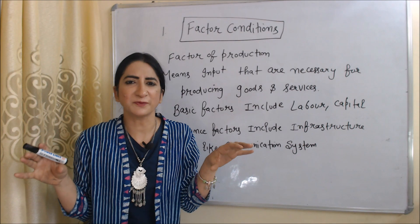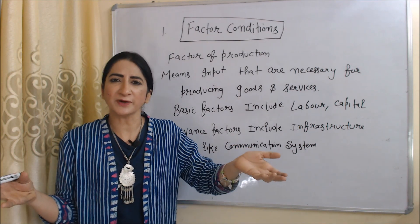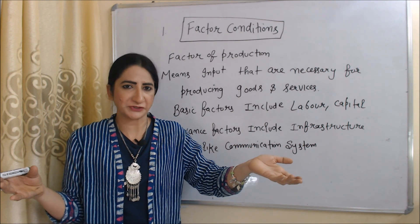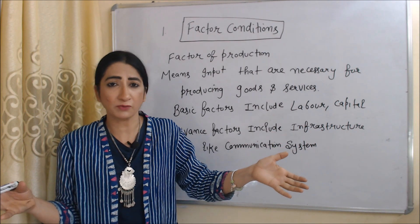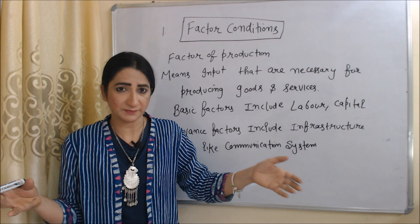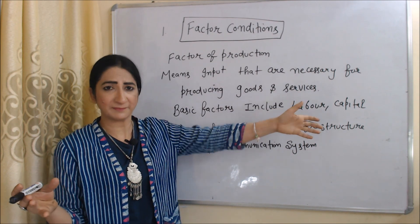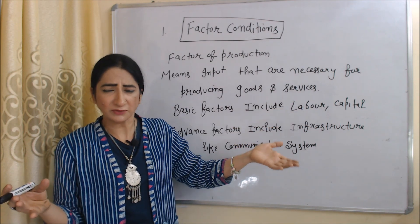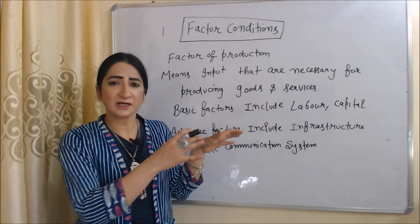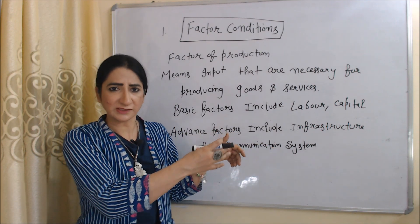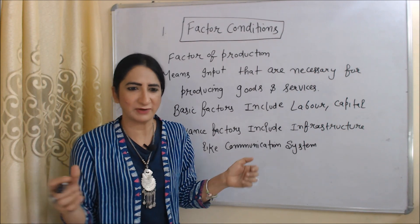The first diamond is factor conditions. Factor conditions means factors of production — inputs that are necessary for the production of goods and services. Basic factors include labor and capital, while advanced factors include infrastructure like communication systems. Countries that have all these factors will obviously get success at the international level.